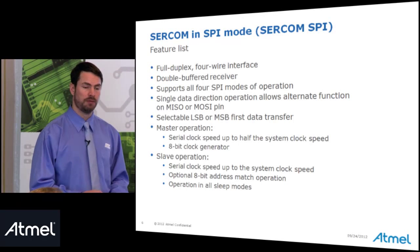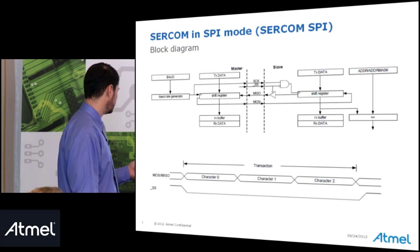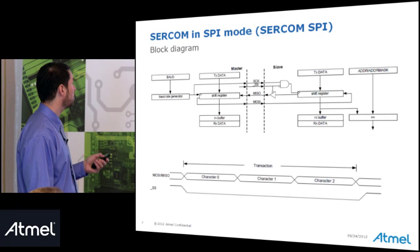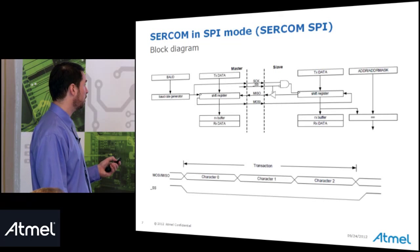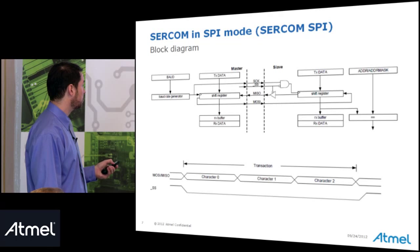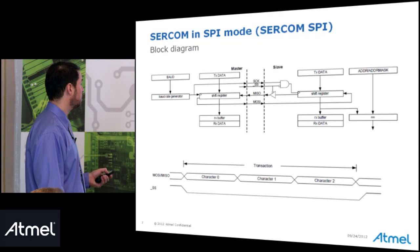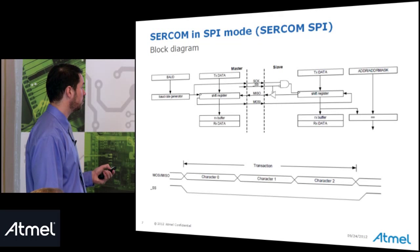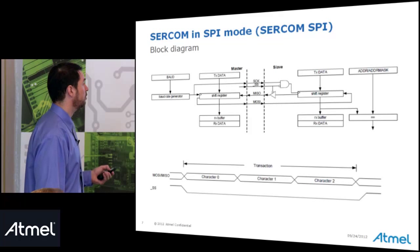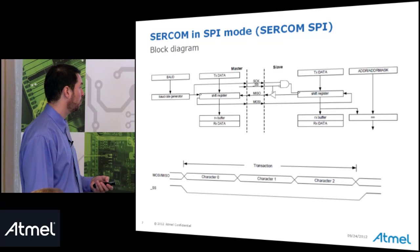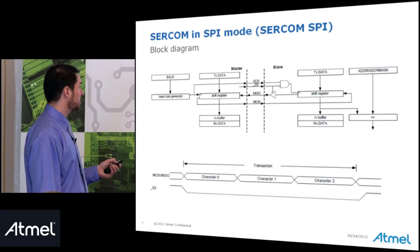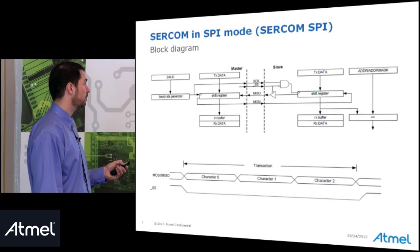In slave operation the serial clock speed can run up to the system clock speed but is still limited to 24 megabits per second. Optional 8-bit address match operation is available and the module is operational in all sleep modes. Looking at the SPI register diagram, we see a baud rate register which sets the target baud rate, a baud rate generator clocking a shift register and the serial clock line. The shift register is shared between TX data and RX data registers, with double buffering on receive — data first enters an RX buffer register before becoming available in the RX data register — ensuring no data is missed when the device is in sleep mode.